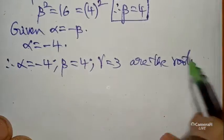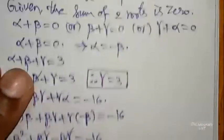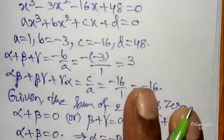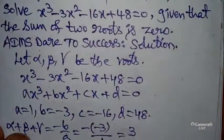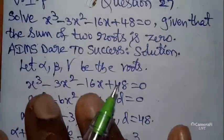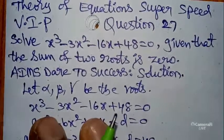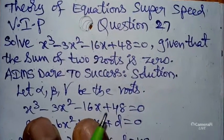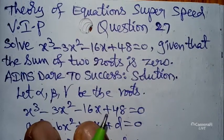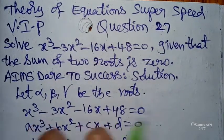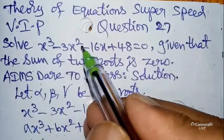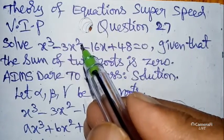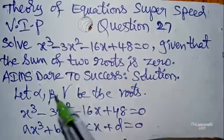So the roots of x³ - 3x² - 16x + 48 = 0 are -4, 4, and 3. I hope you understand, my dear students. If you are satisfied with my explanation, please subscribe to our channel Aims Dare to Success.